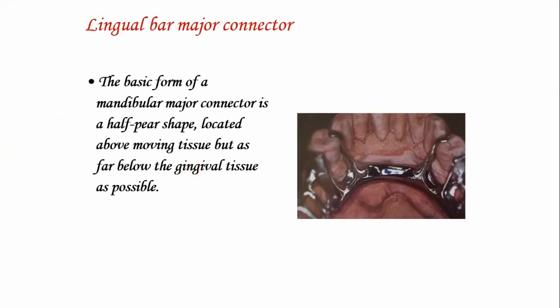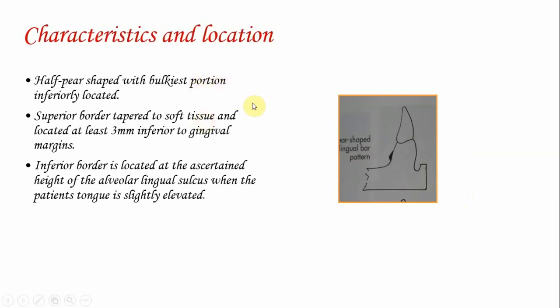The lingual bar is the most frequently used mandibular major connector. Its basic form is a half pear shape located above the moving tissue and as far below the gingival tissue as possible. It is situated above the floor of the mouth and as far below the gingival margins of the teeth as possible. It is half pear shaped with the bulkiest portion inferiorly located, the superior border is tapered to the soft tissue, and located at least 3 mm inferior to the gingival margins.